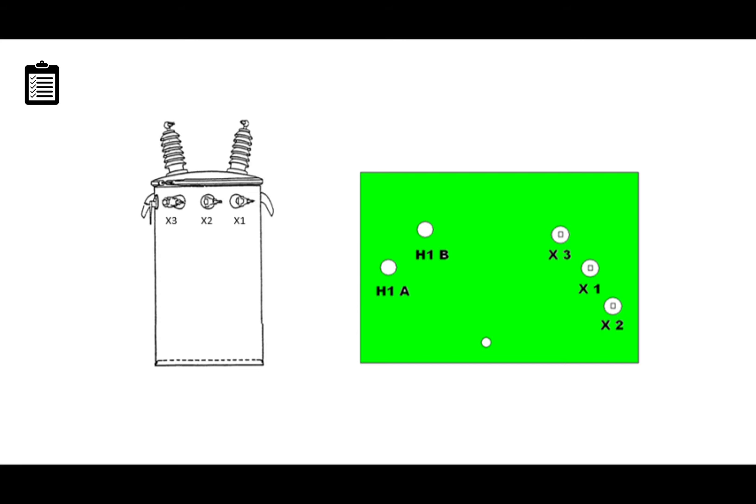The only real difference you'll notice is on a pad mounted transformer, the X2 is located in the bottom right hand side, and on an overhead transformer the X2 is located in the center. The cases will be grounded. They're made of metal.